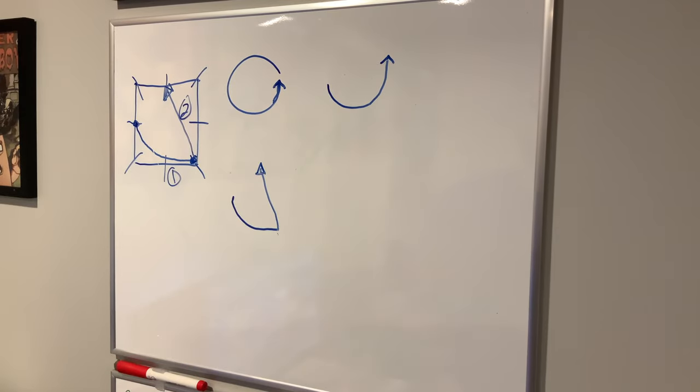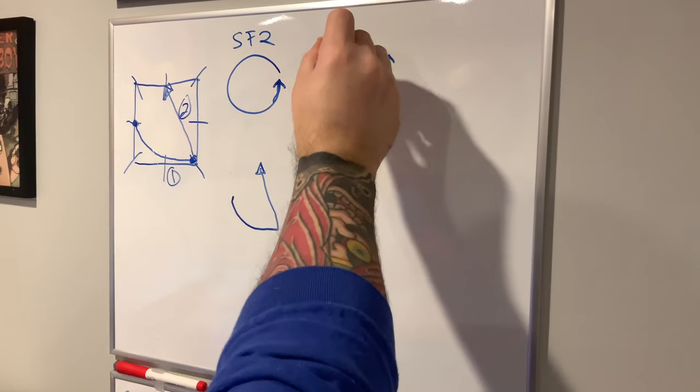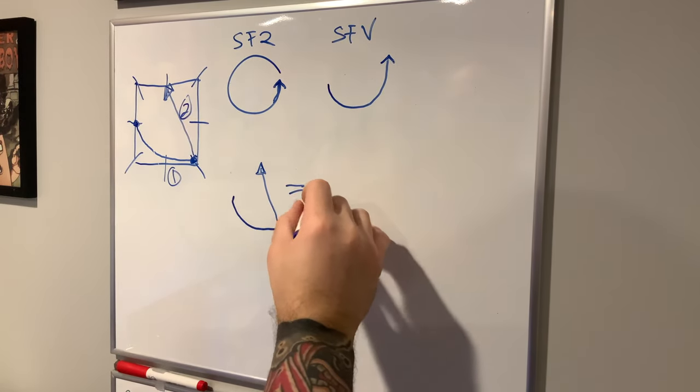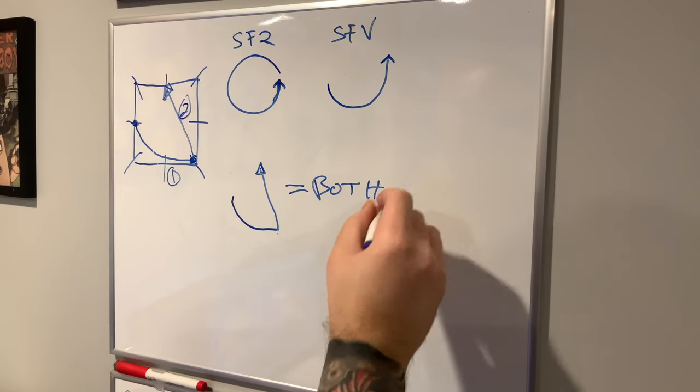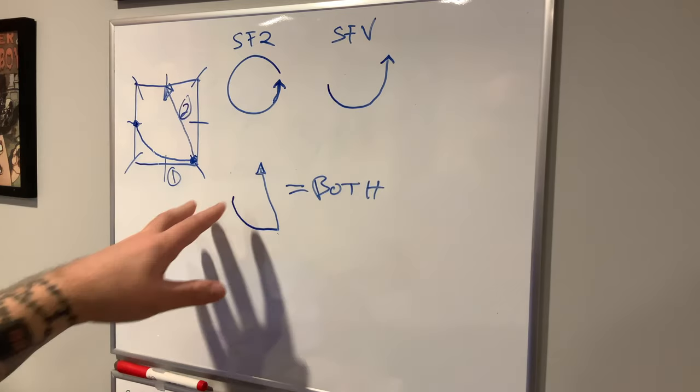So what this motion would look like is kind of down into the corner and straight up. So it looks very different from the conventional Street Fighter 2 motion and then the Street Fighter 5 motion. And this one works in both. So for those of you struggling with SPD or struggling to do a fast enough SPD to link, this works for me every time.